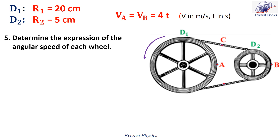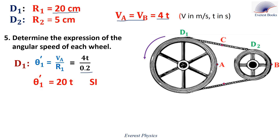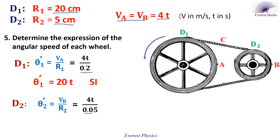Number 5: determine the expression of the angular speed of each wheel. The angular speed of D1 is theta prime 1, which is equal to V_A over R1. R1 equals 20 centimeters, which is equal to 0.2 meters. The angular speed of D2 is theta prime 2, which is equal to V_B over R2. R2 equals 5 centimeters, which is equal to 0.05 meters. And V_B equals 4T. Then theta prime 2 equals 80T in SI units.